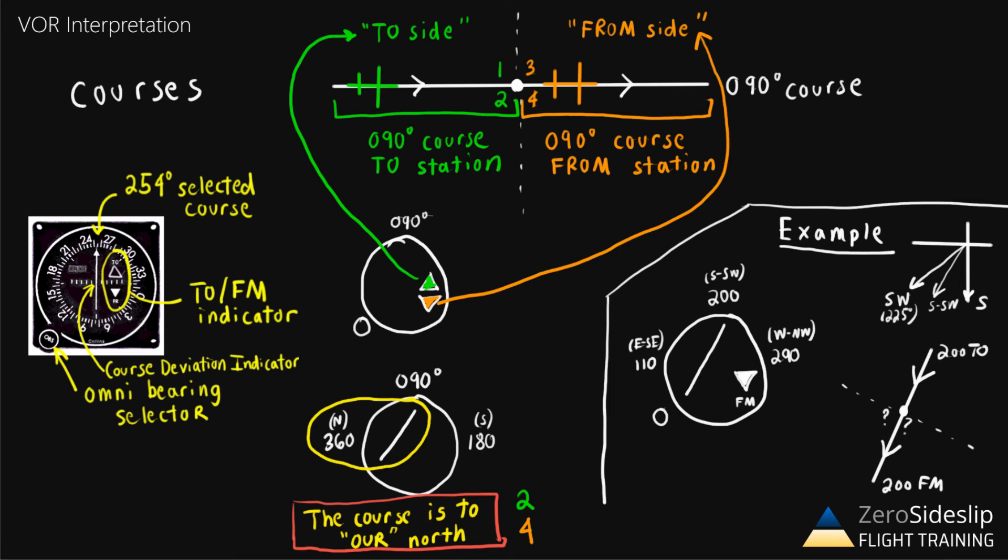So we know we're in either this quadrant or this quadrant. Then the final step is to say, well, the needle is telling me that the selected course, the 200 selected course, is to our east-southeast. If the airplane were over here, clearly the selected course would in that case be to our west or northwest. So that can't be the answer. But if the airplane were anywhere in this quadrant, if we were to draw a line from any potential airplane position to our course, it would be in an east-southeast direction. So that gives us our answer. The airplane is located somewhere in here.